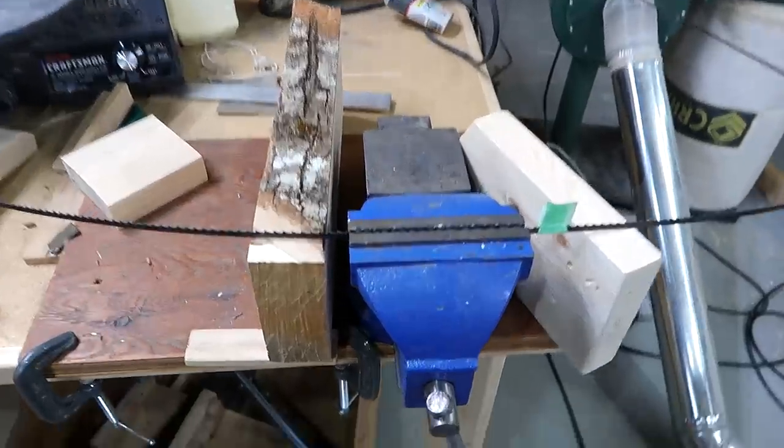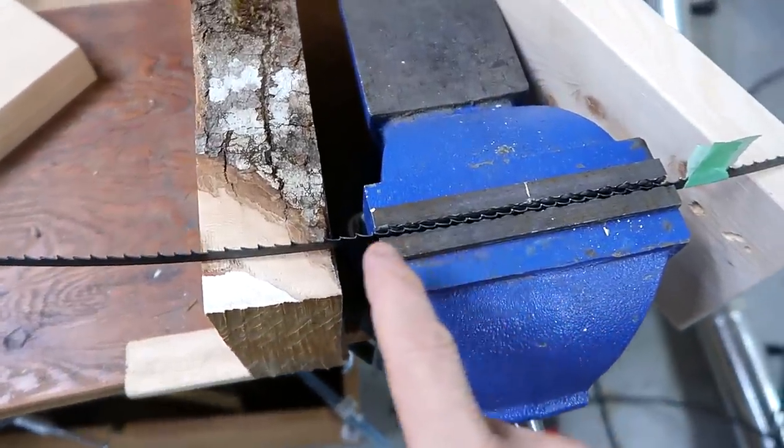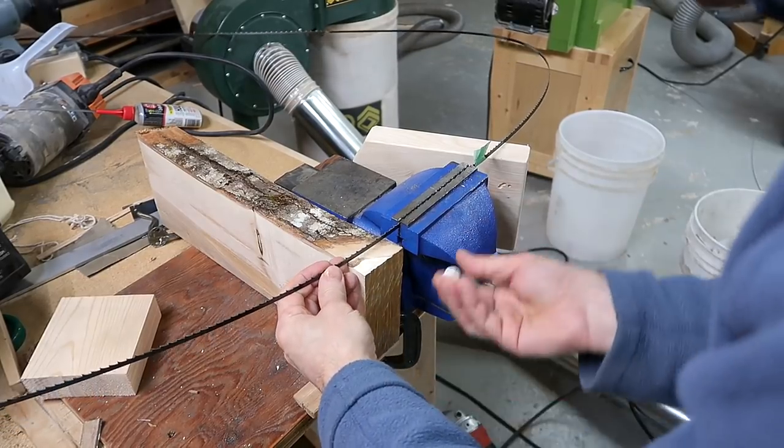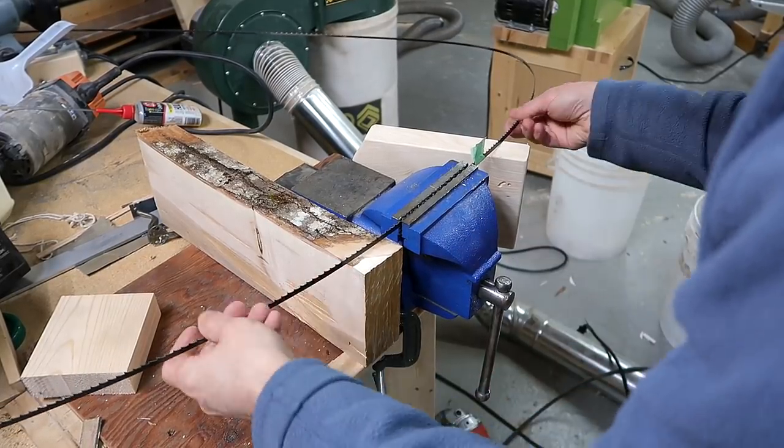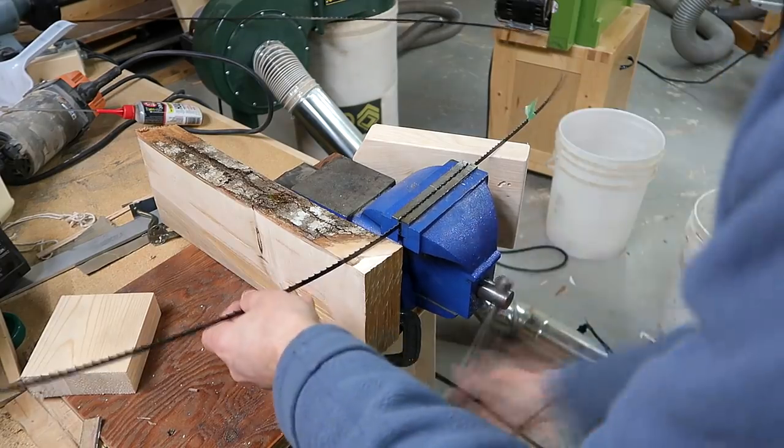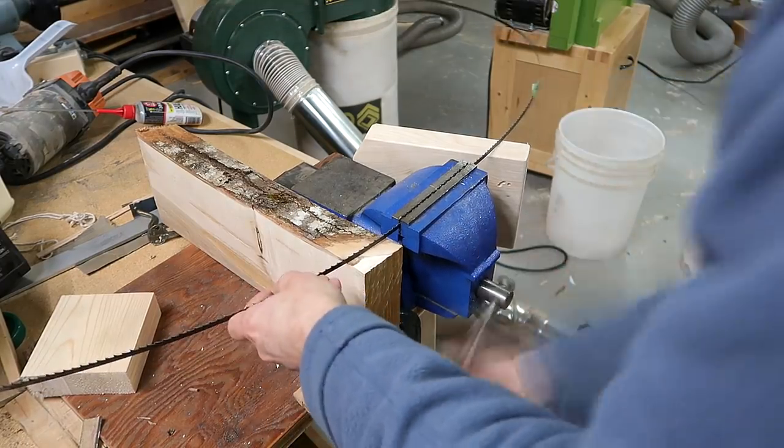Since that quarter inch blade is hardly usable to me the way it works right now, I'm wondering can I reduce the set of that blade just slightly? Alright, here's my barbaric blade set reduction setup. Let's see if it works. I'm overlapping my presses because the vise jaws have a texture to them, so they might sometimes miss some of the teeth.